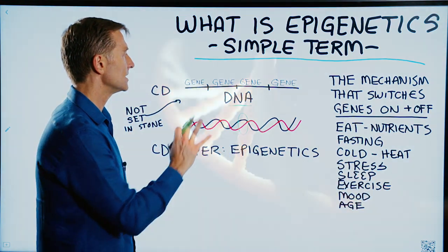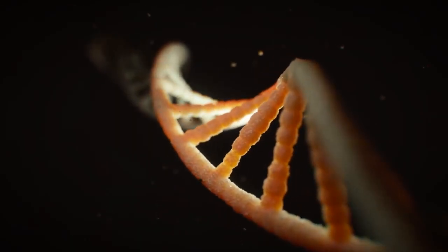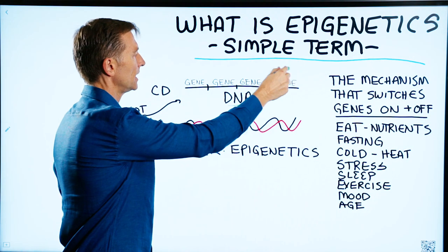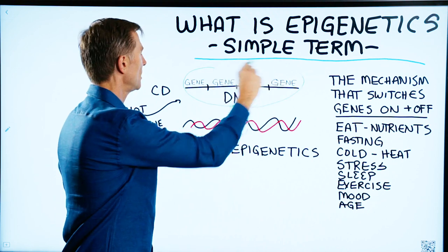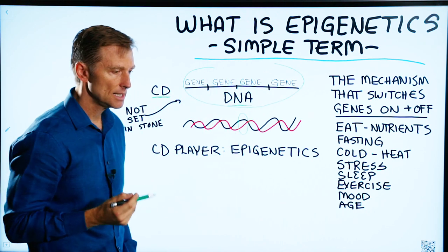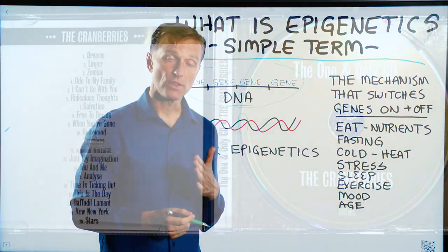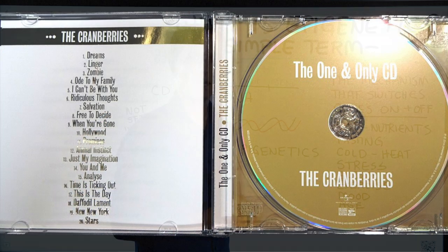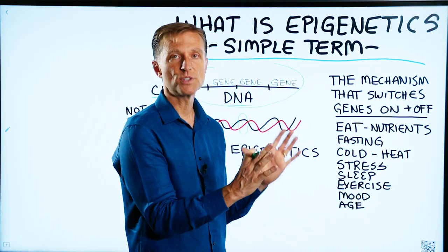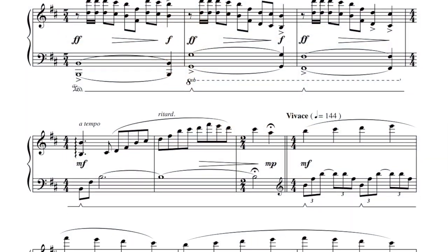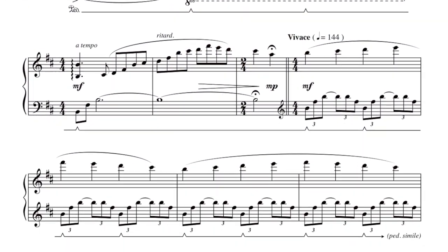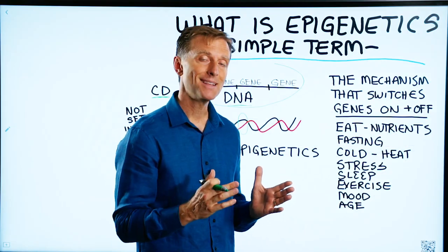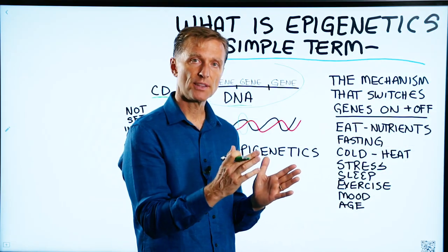That's basically what DNA is, and a section of the DNA would be a gene. This can be compared to a CD — on a CD you have the song, the artist, and the playlist in a certain order. Another example would be sheet music for a song on the piano. You have all these different notes in a certain sequence, and the sheet music is basically the instructions on how to create that song.